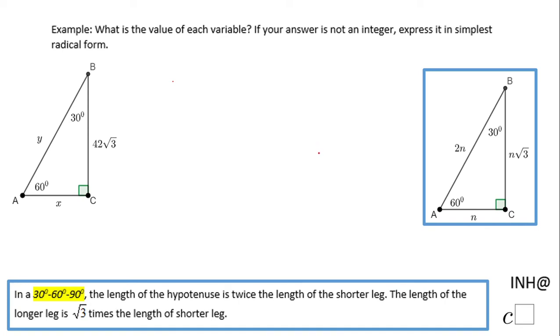Welcome or welcome back to I Need Help At Cisco. In this example, we have to find the value of each variable. Notice here we have x and y. One is the hypotenuse of this triangle and one is the leg. This triangle is a special triangle, a 30-60-90 triangle.